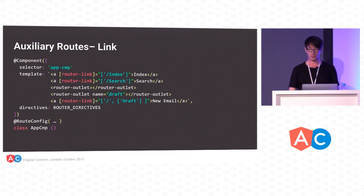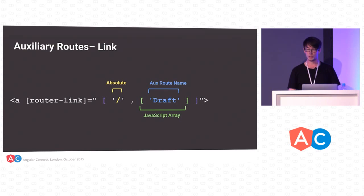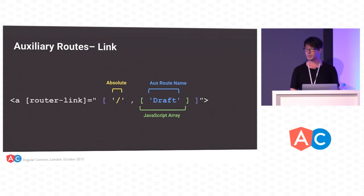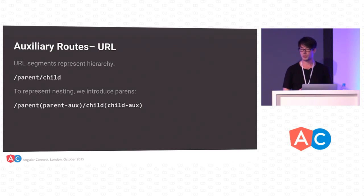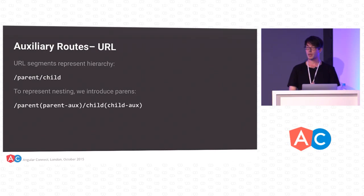To link to an auxiliary route, we use our router-link but extend it a bit. We have this absolute link, and we want to say this is an auxiliary route of the AppComponent, the top-level component. To denote it's an auxiliary route, we use a JavaScript object inside the array. We give the auxiliary route name, which is 'Draft' with a capital D. One interesting feature of auxiliary routes is that we preserve them in the URL fully — when you have auxiliary routes, we wrap them in parentheses. You can have as many auxiliary routes as you want as long as they have unique initial path names for any given component.